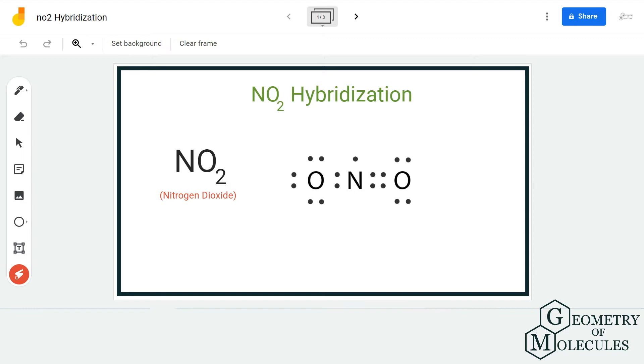Here we are going to use the steric number to find out the hybridization because it is the easiest method to find out the hybridization of any molecule. So to start with it, we are first going to look at the Lewis structure of NO2.